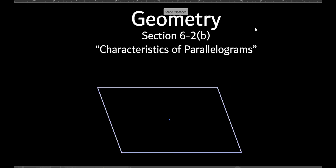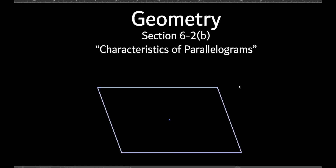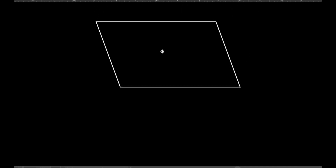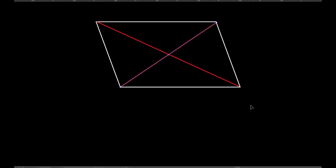They have this shape with a slant, and they put these lines that connect those vertices. We talked about that yesterday — what are those called? A diagonal. Very good. So those are diagonals. This is Example 1.